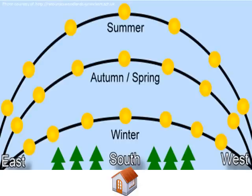This figure shows the path the sun takes across the sky during the spring and fall, winter, and summer. The sun takes a lower path in winter and increases each day until it reaches its highest point on the first day of summer. This day is also known as the summer solstice.